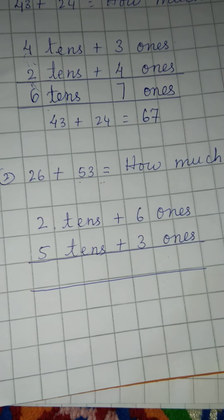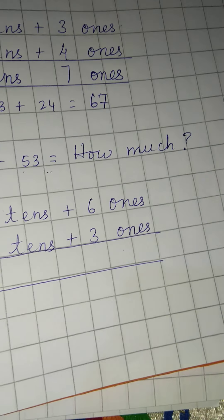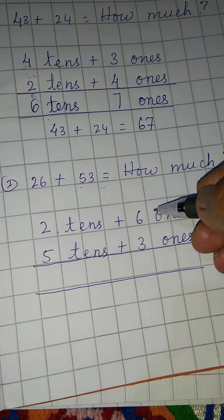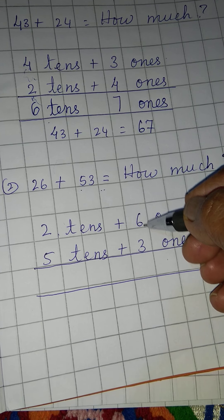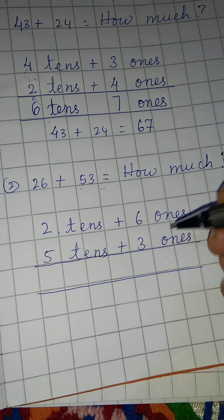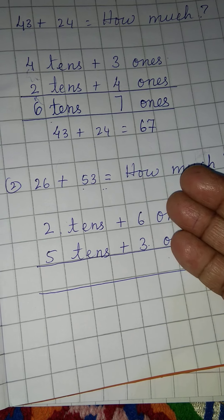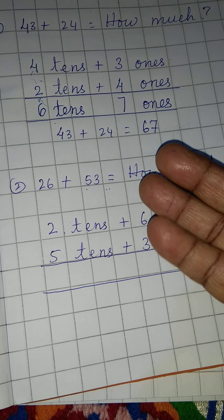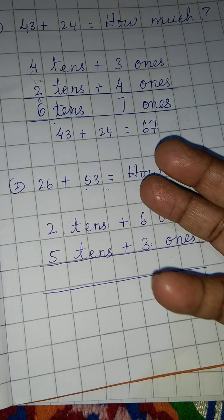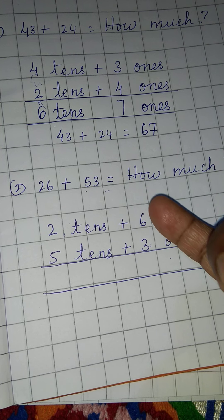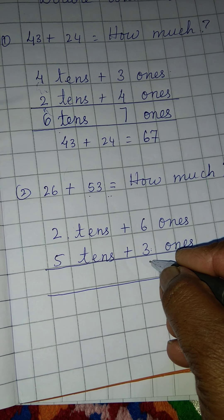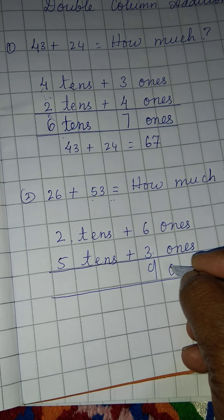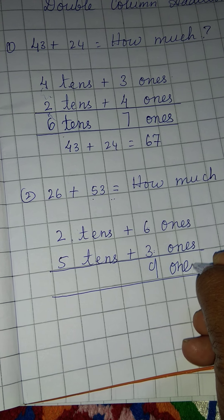Okay, now how should we add? First we have to add the ones place children. Count this — 6 plus 3. Keep 6 in the mind, then 3 fingers up. After 6: 7, 8, 9. Write your 9. That is 9 ones children. Write your 9 ones.